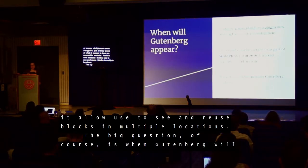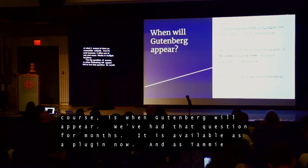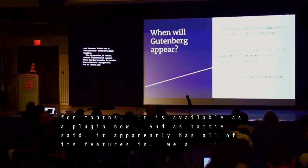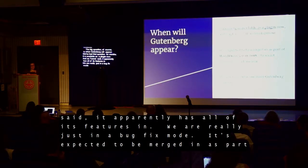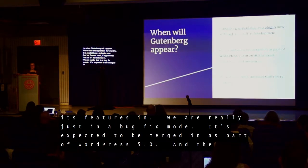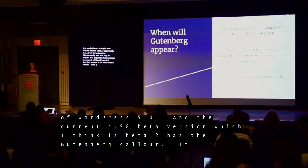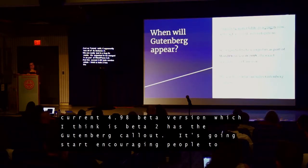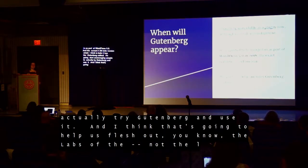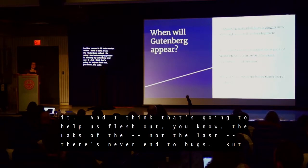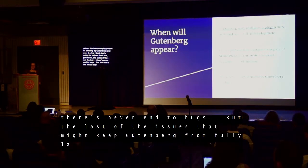The big question is when Gutenberg will appear. It is available as a plug-in now, and as Tammy said, it apparently has all of its features in — we are really just in a bug-fix mode. It's expected to be merged in as part of WordPress 5.0. The current 4.9 beta has the Gutenberg call-out, so it's going to start encouraging people to try Gutenberg, which will help flush out the last issues before it fully launches into core.